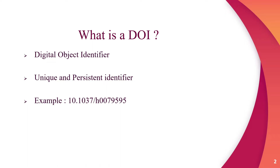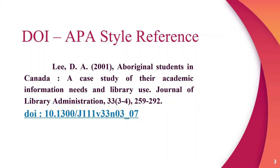A DOI is included in a journal article reference using the APA style guide in its sixth edition. The DOI is typically located on the database record for the document — the DOI is found here on this Academic Search Complete database record for a journal article.